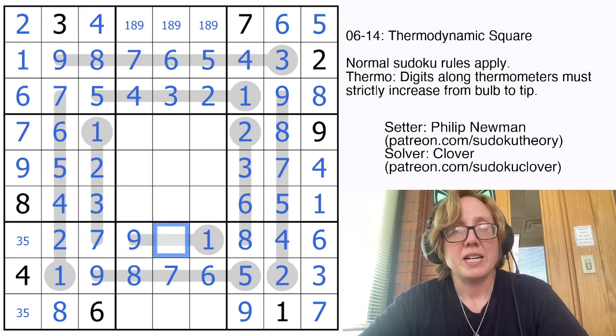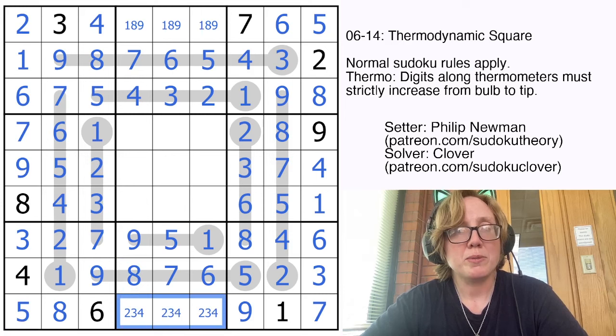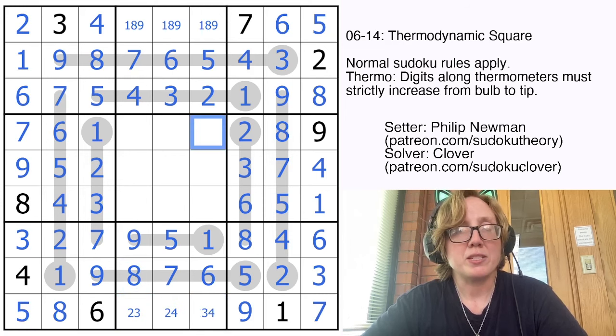And that means we're left with a 3, 5 pair. But because this is a 3, I can't place a 3 on the middle of the thermometer. So that will be my 5. These will now be 2, 3, and 4. So eliminate 4, 3, and 2 here.